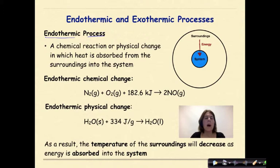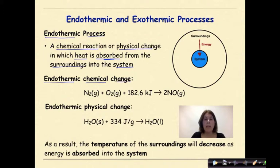Endothermic processes are a chemical reaction or physical change in which heat is absorbed — that's really key — absorbed from the surroundings into the system. Let's look at two examples. We can have an endothermic chemical change. Diatomic nitrogen reacts with diatomic oxygen, absorbs a certain amount of energy, and produces two moles of nitrogen monoxide. This is a chemical system in which we have two reactants absorbing energy to come together to form a new product.